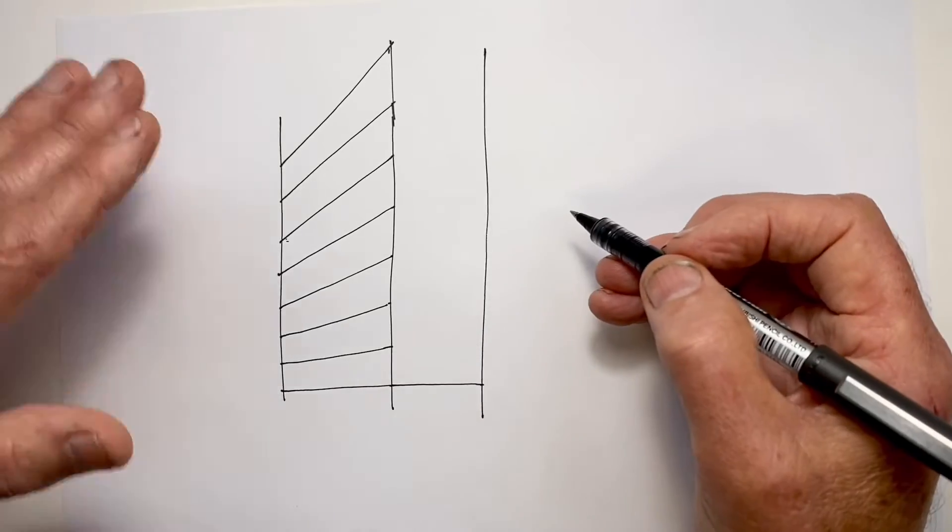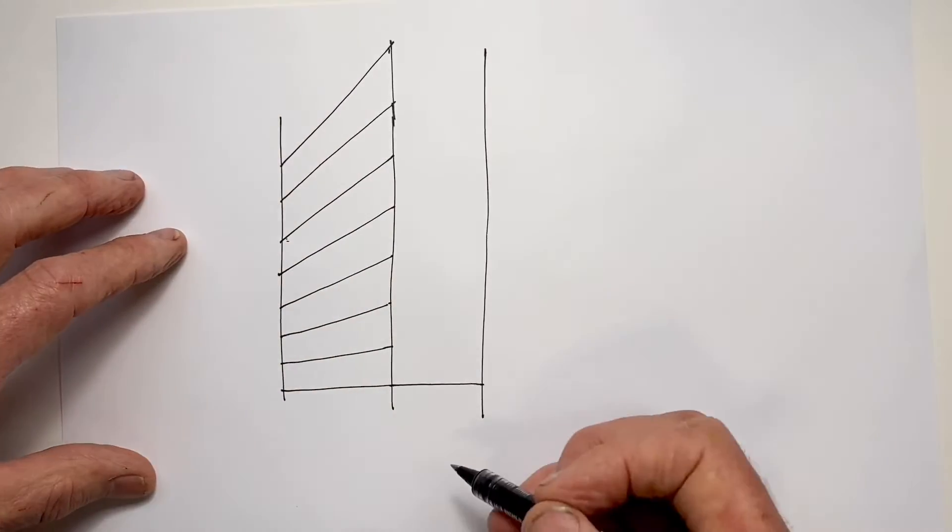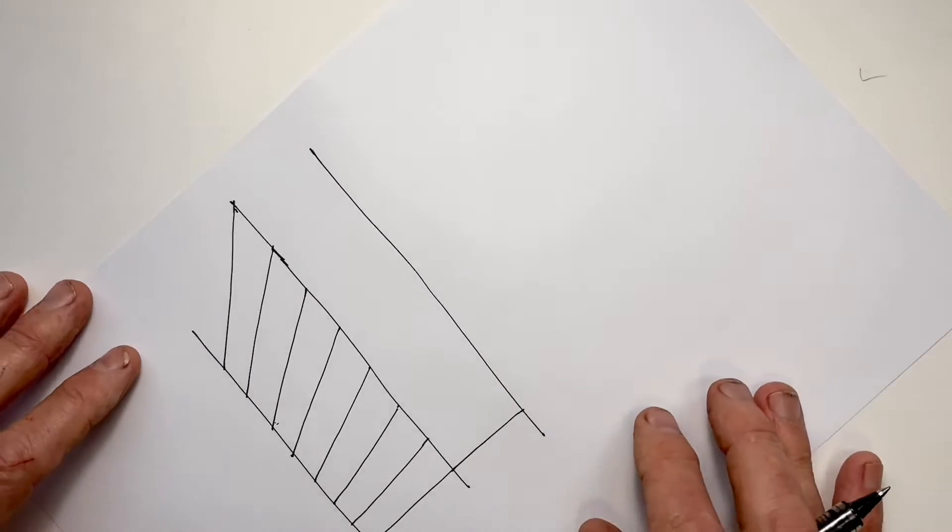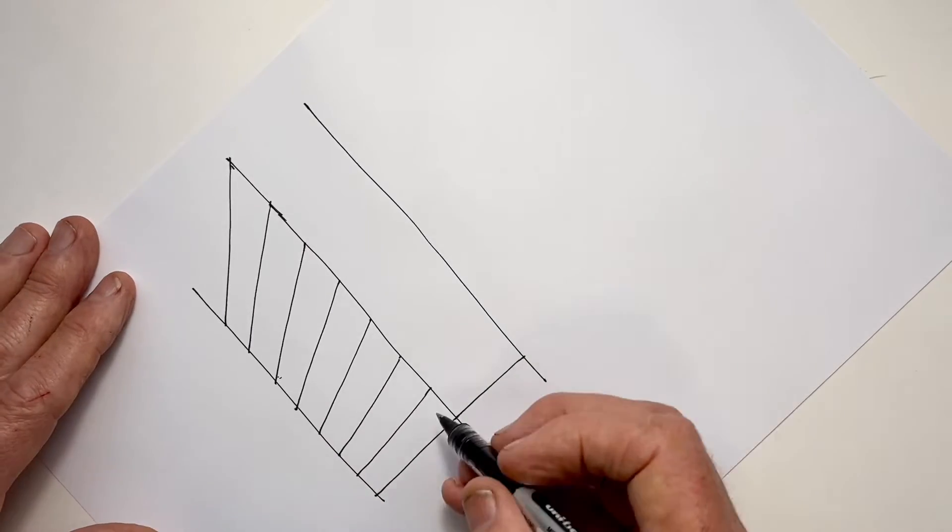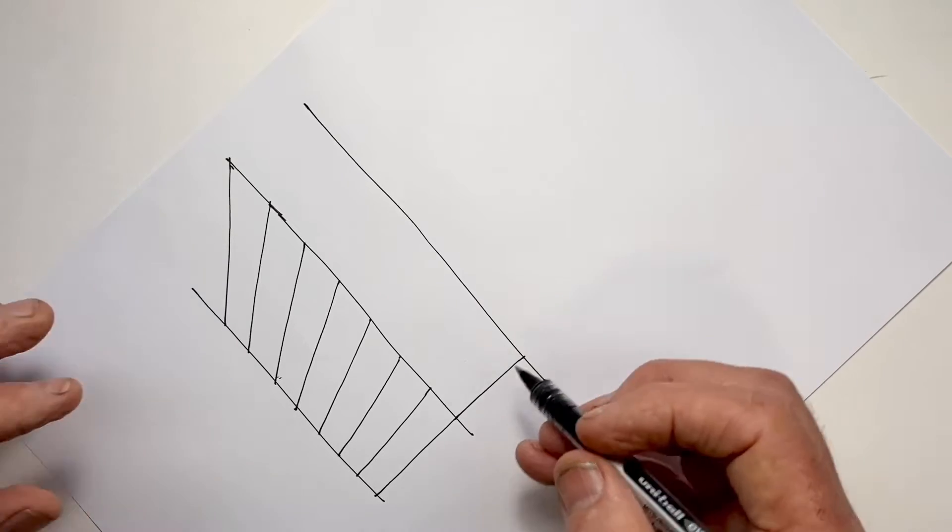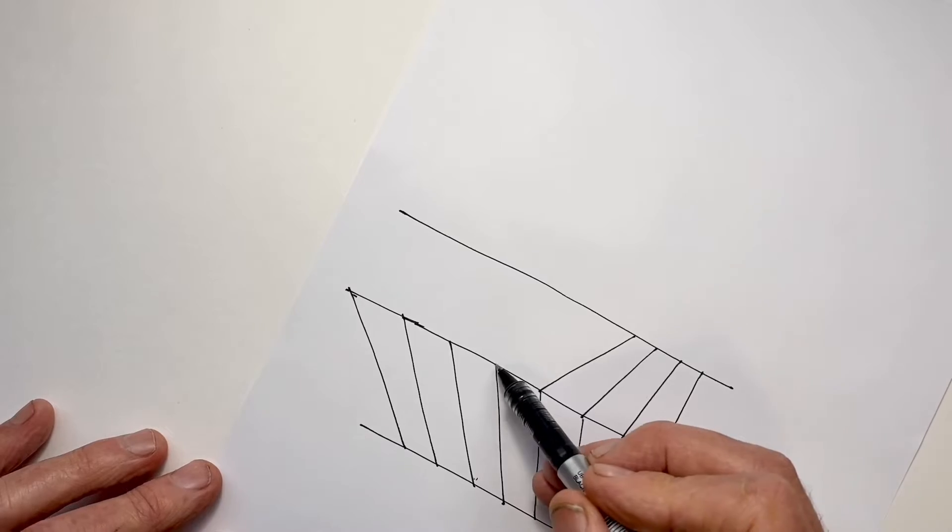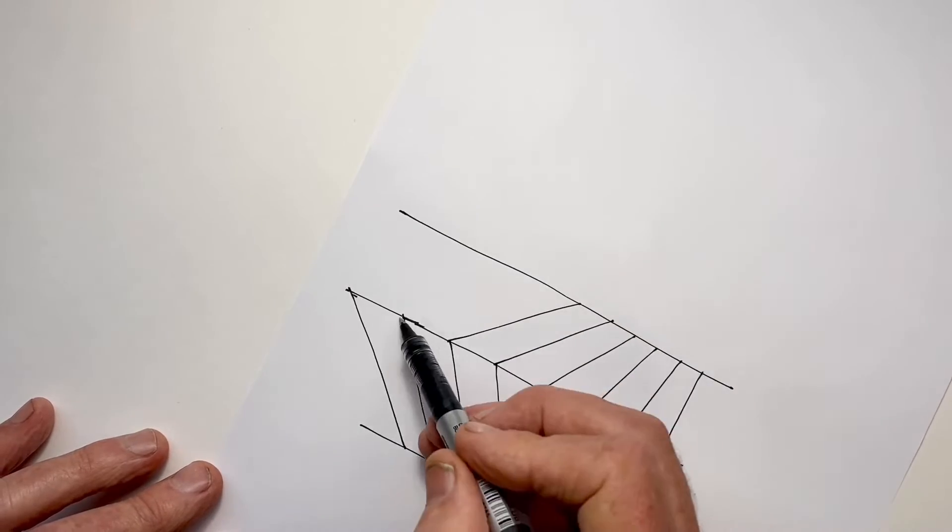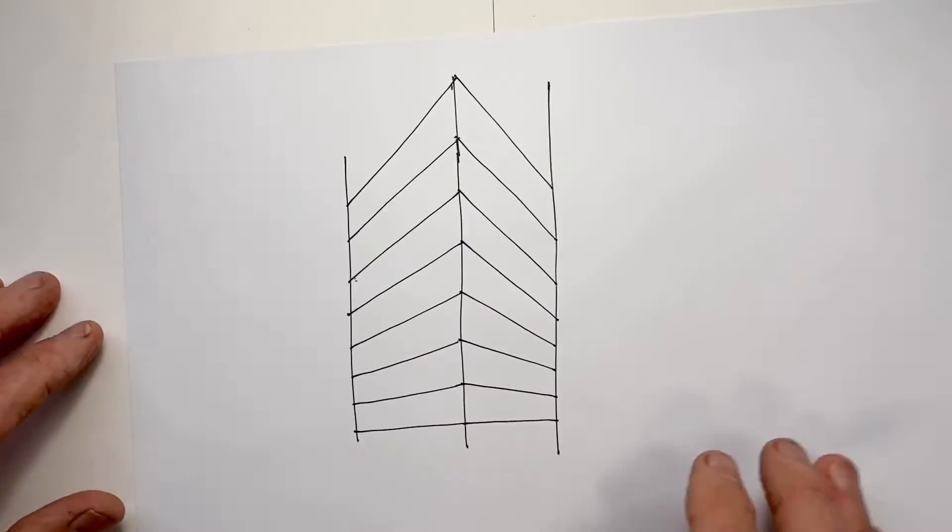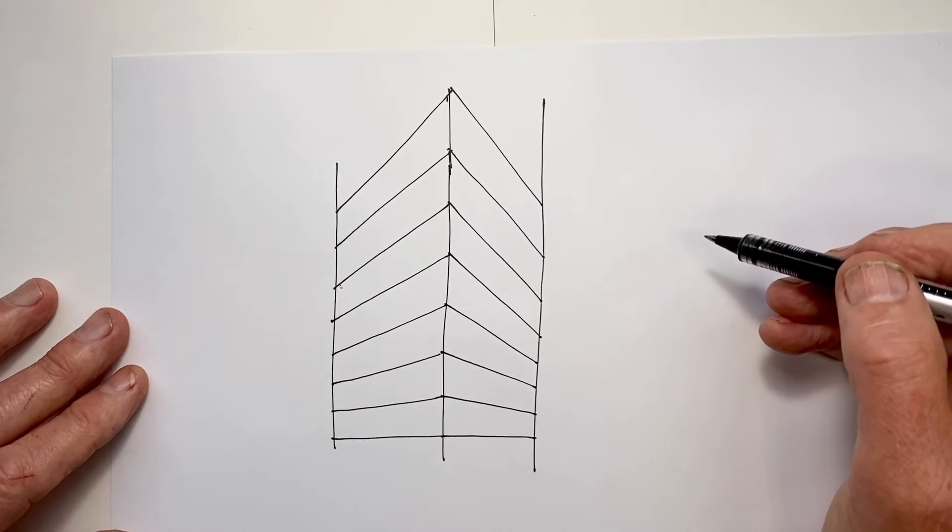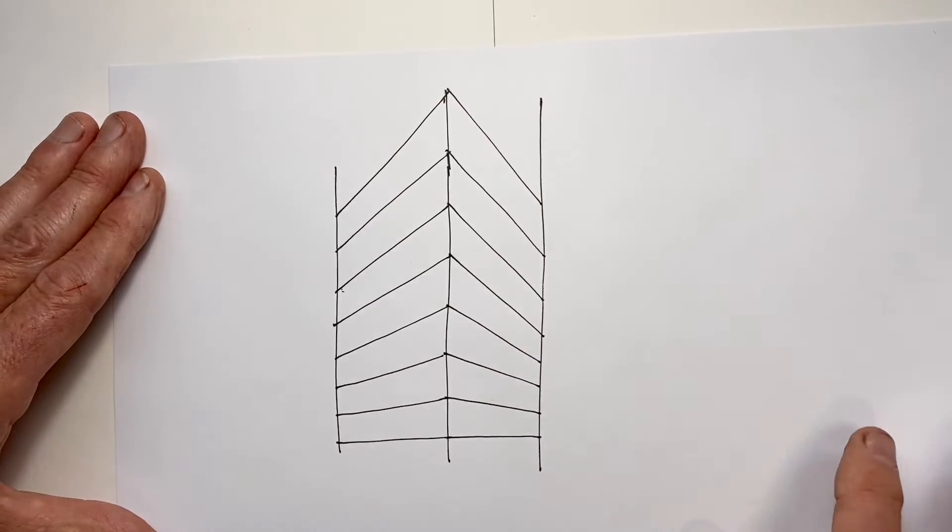Now we repeat this same fanning pattern down this way. And a little extra important tip: It's often easier to position our paper so that our line direction is the easiest direction for us to follow. I think these two lines are a little bit too close to being parallel.